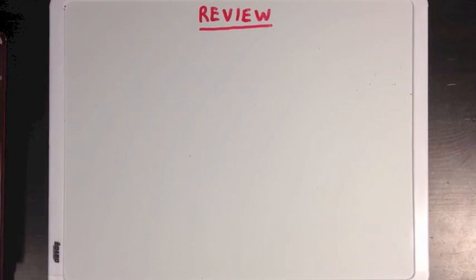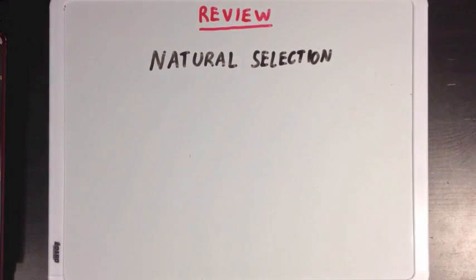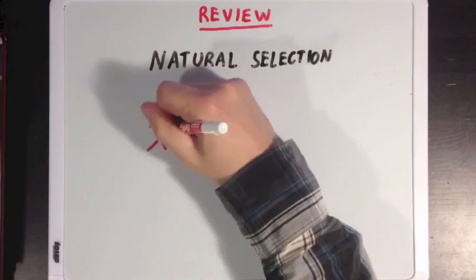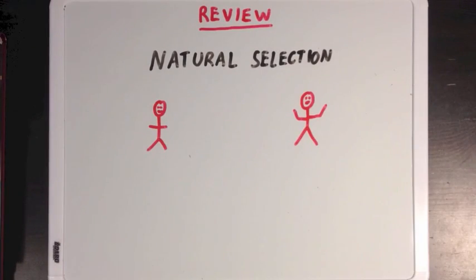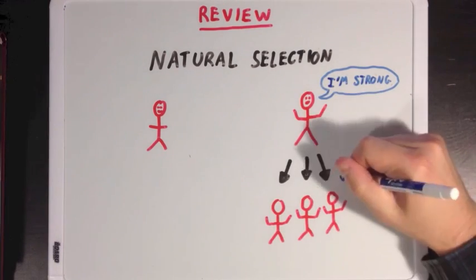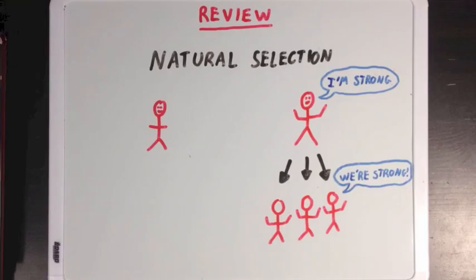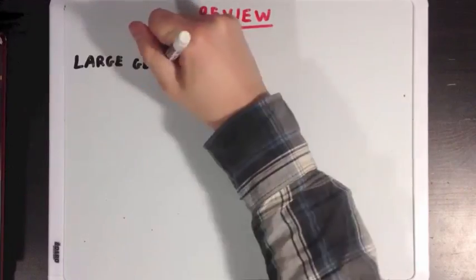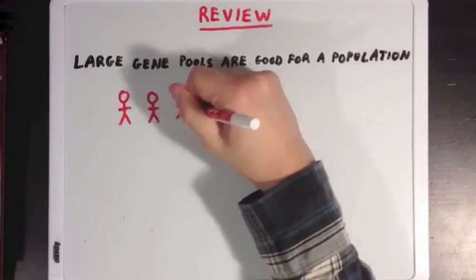Before we do that, let's review the concept of natural selection. Natural selection is the idea that a member of a population that has a special genetic trait that's advantageous is more likely to live to an age where they can reproduce and pass on that special trait to their offspring.